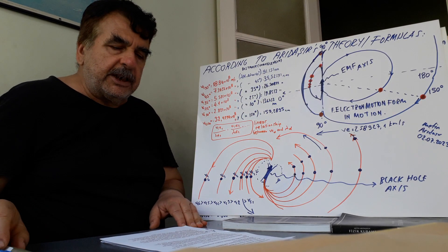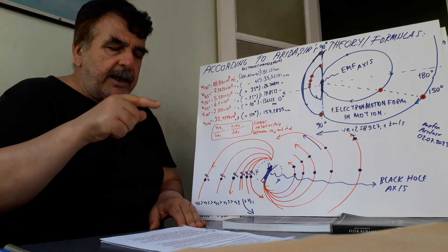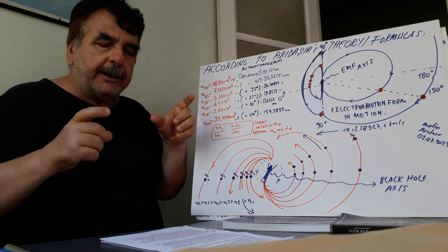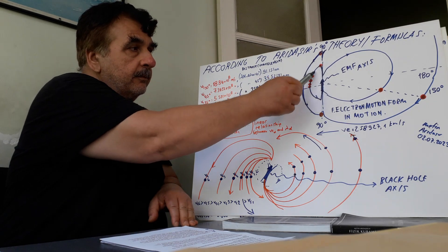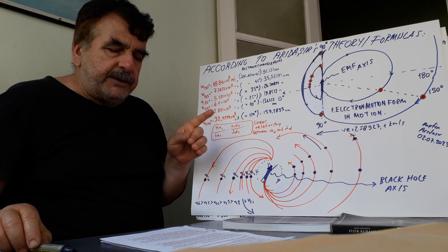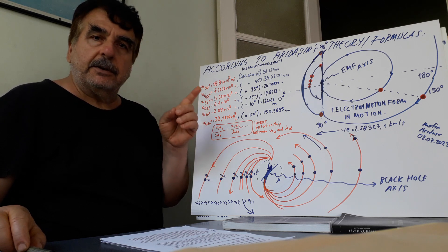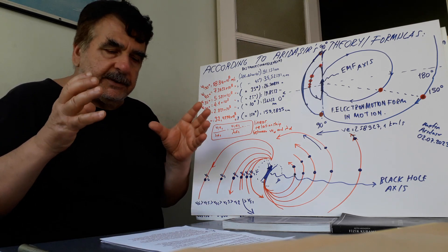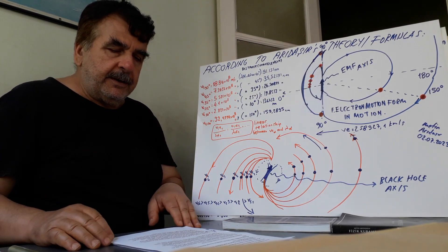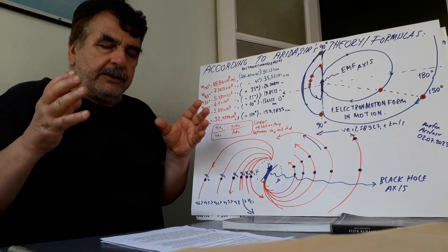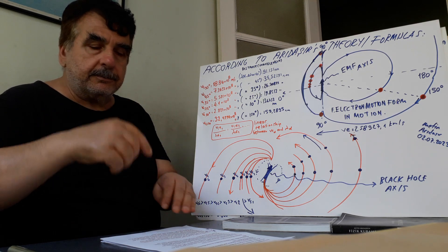On the contrary to Kepler's law, when a photon orbits from 90 degrees to 0 degrees, as the distance wavelength between the photon and the electron motion form axis decreases, each point's linear velocity also decreases from 90 degrees through 0 degrees. But correspondingly, each point's mass increases from 90 degrees through 0 degrees, and vice versa.